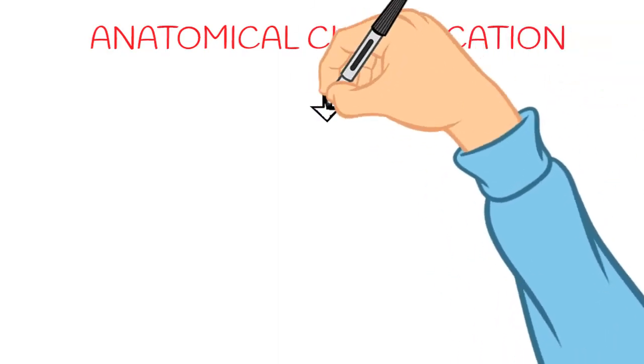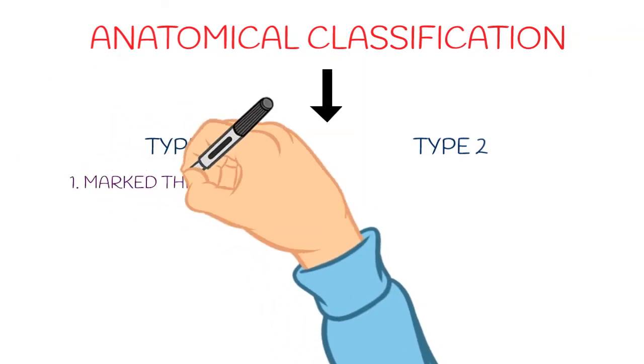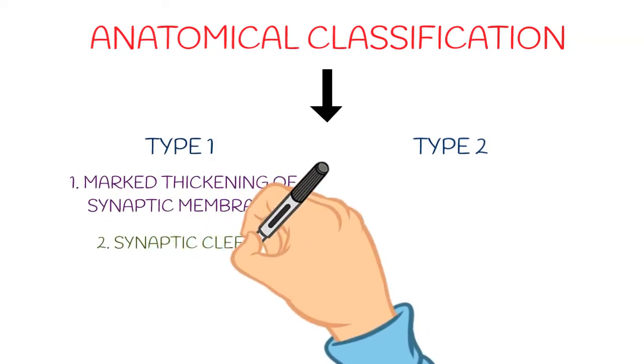So anatomical classification further has two types: type one and type two synapses. Type one is where the gap between pre and post-synaptic membranes is wide.